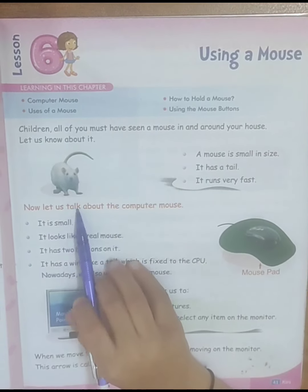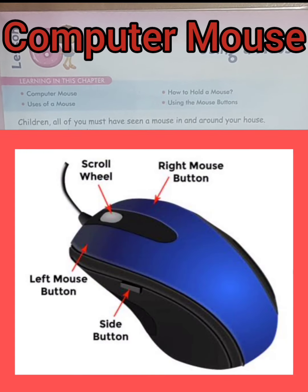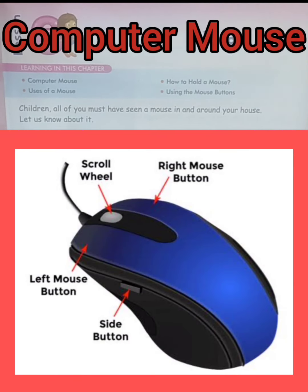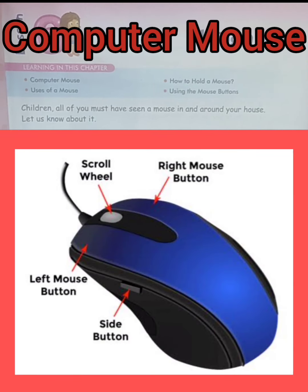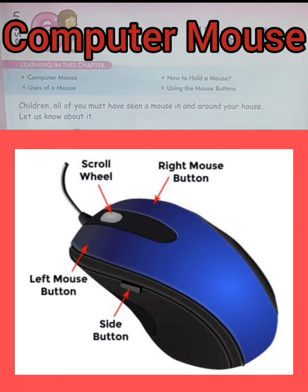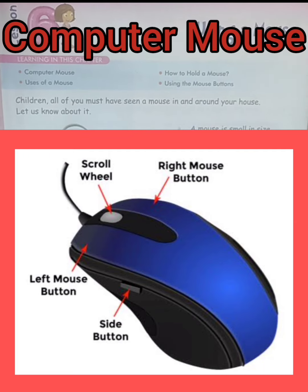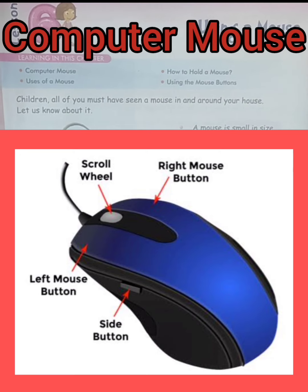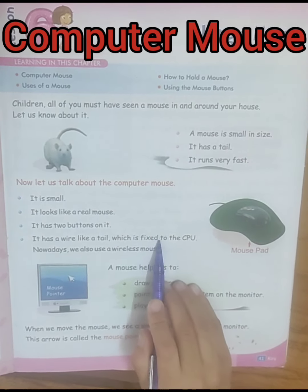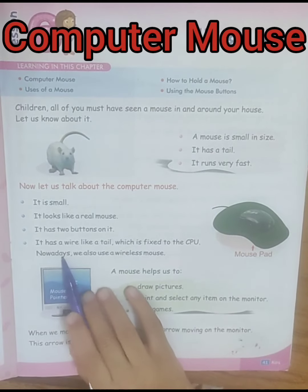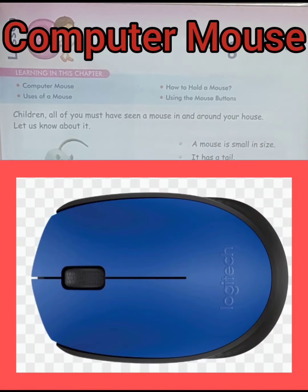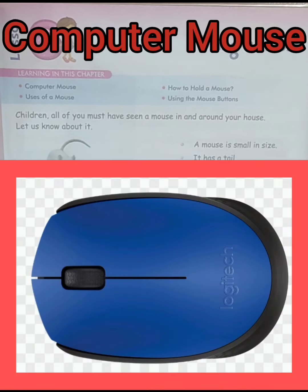Now let us talk about the computer mouse. It is small and it looks like a real mouse. It has two buttons on it. It has a wire like a tail which is fixed to the CPU. Nowadays, we also use a wireless mouse.